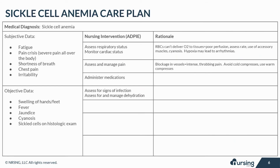Medications are given to manage the symptoms of a crisis event and treat any underlying infections that may cause a crisis, including IV fluids to prevent and treat dehydration, analgesics for pain including opioids, antibiotics for infection, and hydroxyurea, which prevents sickling of red blood cells to reduce the number of crisis episodes.